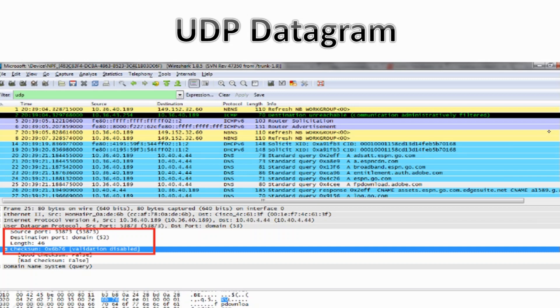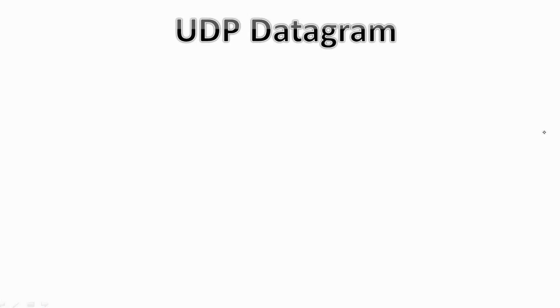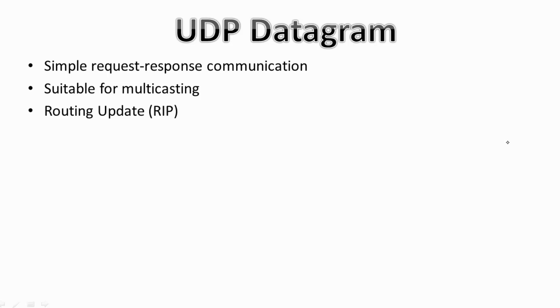First, UDP is used for simple request-response communication when the size of data is less and hence there is lesser concern about flow and error control. It is a suitable protocol for multicasting as UDP supports packet switching. UDP is also used for some routing update...